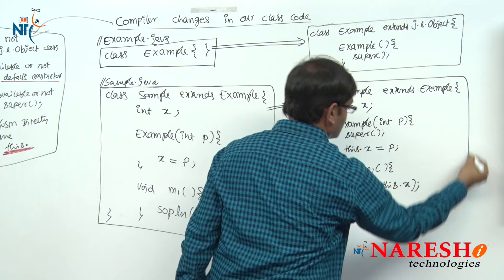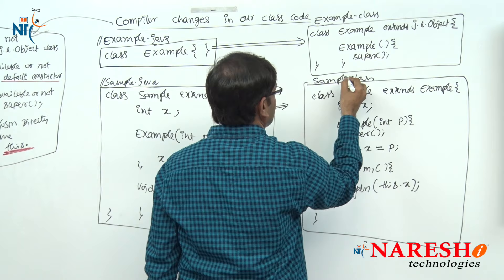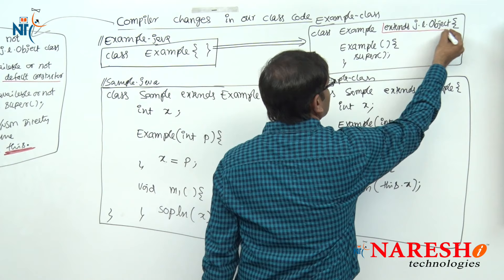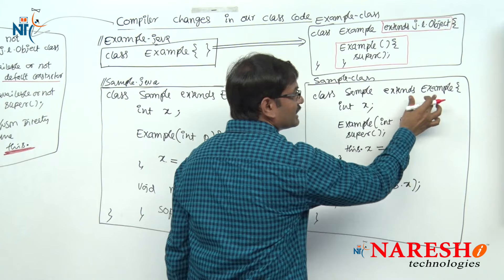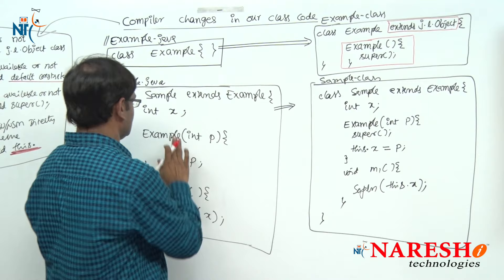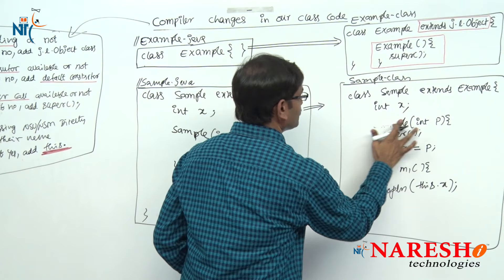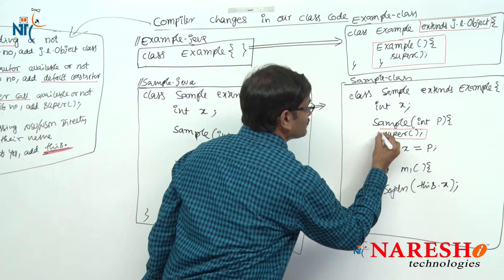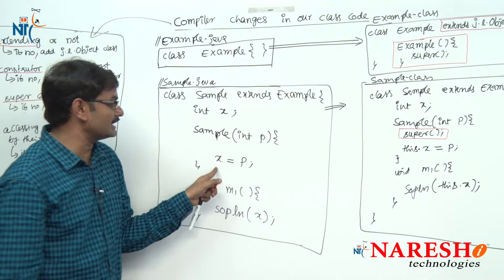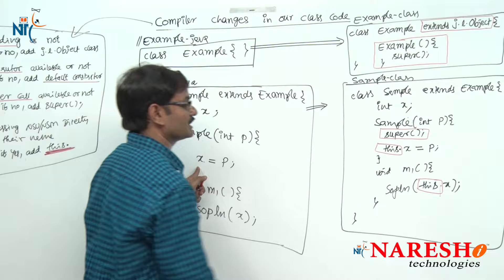Is there any change in the m1 method? Yes. System.out.println(x) — x is a non-static variable accessed directly. So compiler places this.x. Close m1 method, close Sample class. This is our sample.class file. Summary: Example class had no super class — compiler added it; had no constructor — compiler added it. Sample class had a super class — not added; had a constructor — not added; but missing super() — compiler added it; and non-static variables accessed directly — compiler added this dot.